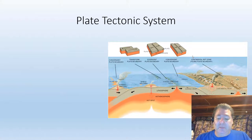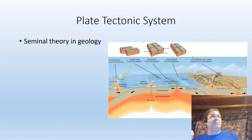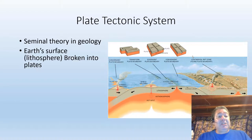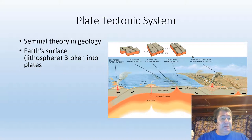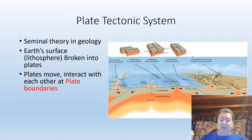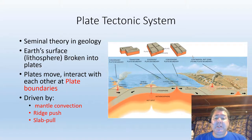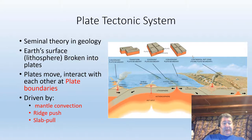The plate tectonic system is the seminal theory in geology — it's used to explain almost everything else in the geosciences. Why are these mountains here? Plate tectonics. Why are there earthquakes? Plate tectonics. In plate tectonics theory, the Earth's surface — the lithosphere — is broken up into lithospheric plates. These plates move around and bump into and interact with each other at what we call plate boundaries, where the two plates meet. These are driven by three different forces: mantle convection, ridge push, and slab pull. We'll discuss those more in chapter three.